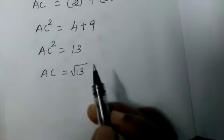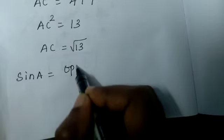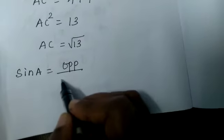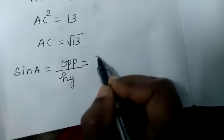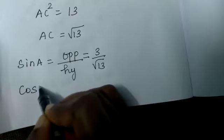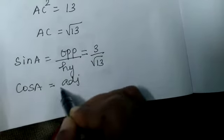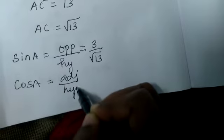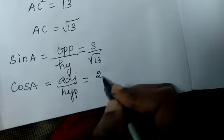Now we know the value of hypotenuse is root 13, so we can find out sinA and cosA. sinA equals opposite by hypotenuse, which is 3 by root 13. cosA is adjacent by hypotenuse, which is 2 by root 13.